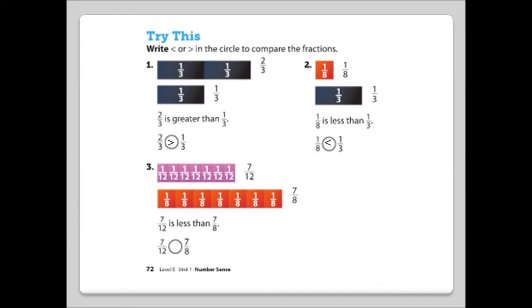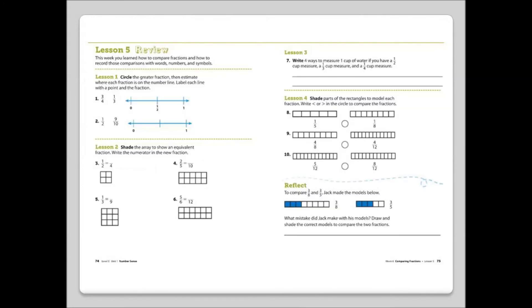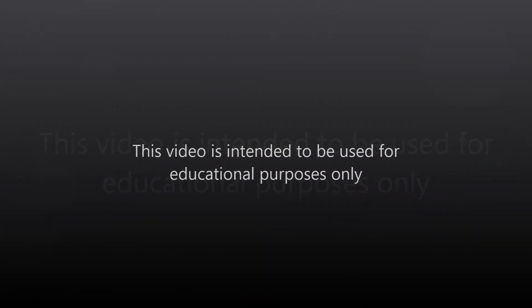Number 3: seven-twelfths and seven-eighths — seven-twelfths is less than seven-eighths. Try page 73 of your workbook on your own. Lesson 5: Comparing Fractions — Review. This week you learned how to compare fractions and how to record those comparisons with words, numbers, and symbols. Try workbook pages 74 and 75 on your own.